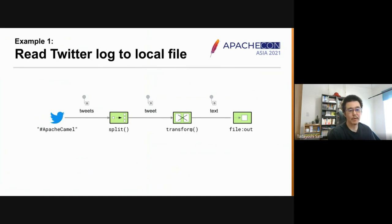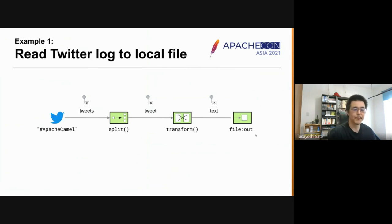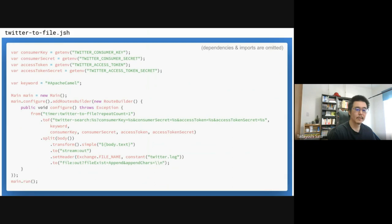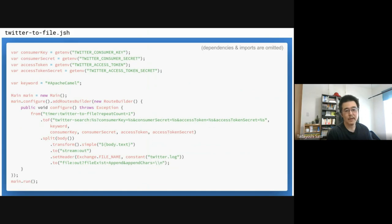We then transform by extracting the tweet body into text, and finally write it to a file one by one. This is the script that realizes the integration. Due to time constraints, we won't look into the code line by line. Let's just see how such an integration task can be easily coded in a script. Without the power of Apache Camel, the code would have been much more complicated and hard to understand at a glance.